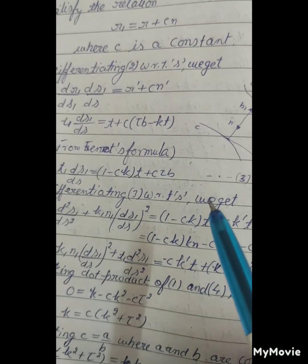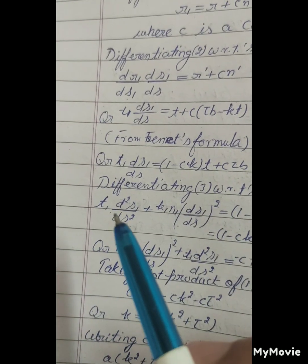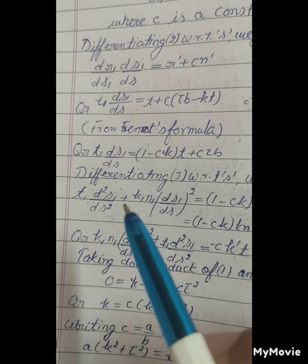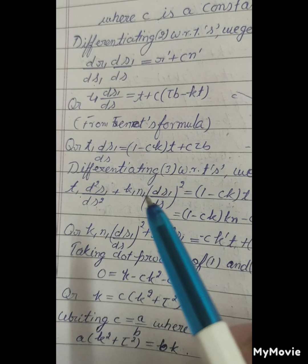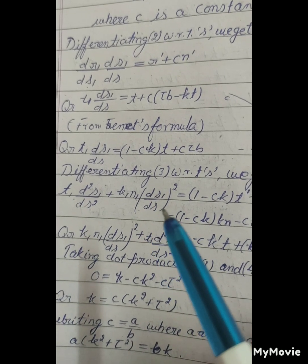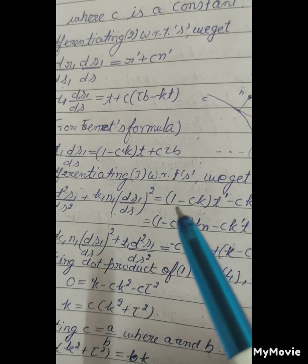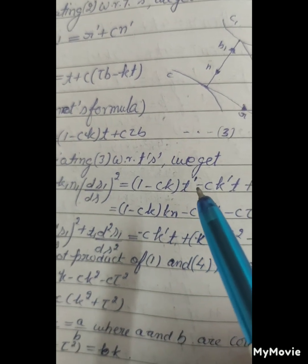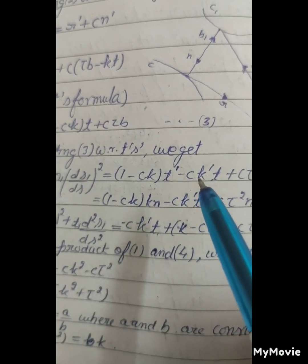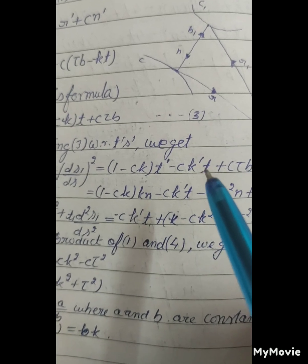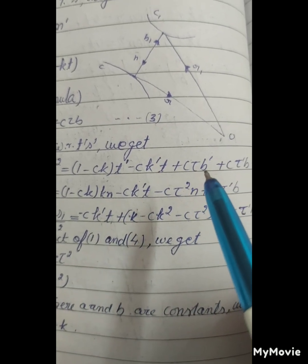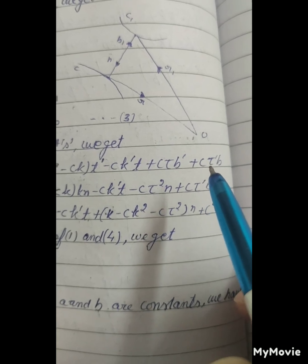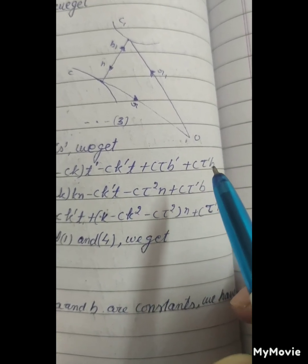Differentiating (3) with respect to s, we get t₁(d²s₁/ds²) + k₁n₁(ds₁/ds)² = (1 - ck)t' - ck't + cτb' + cτ'b.